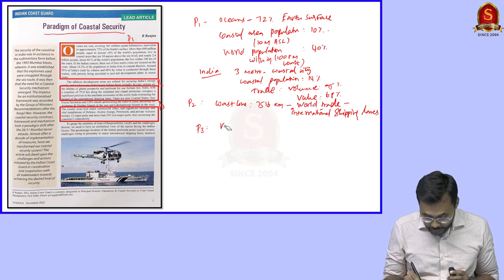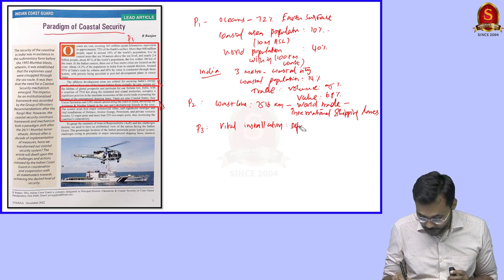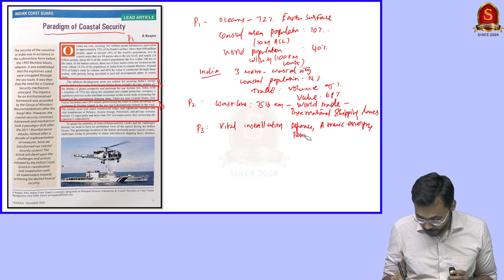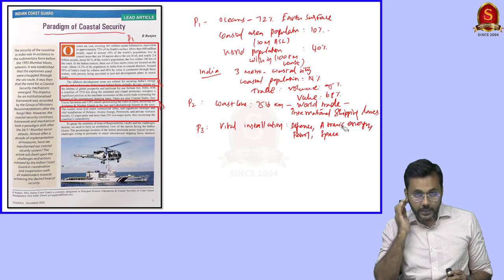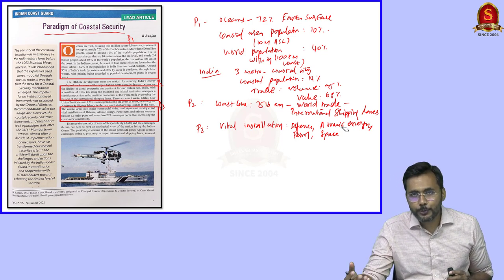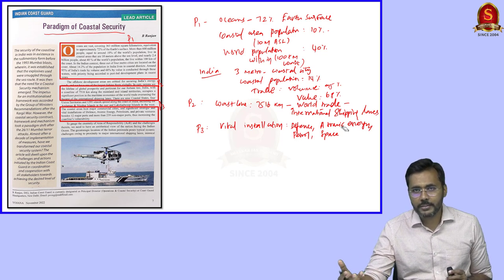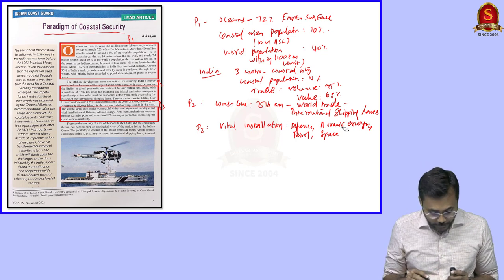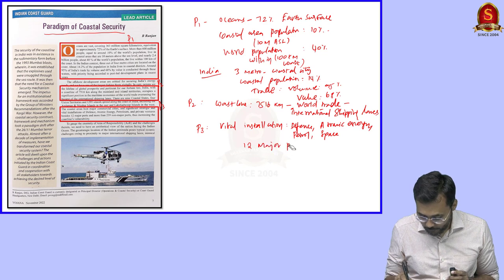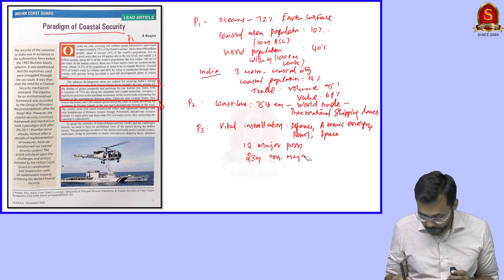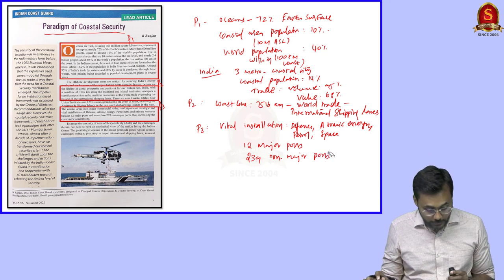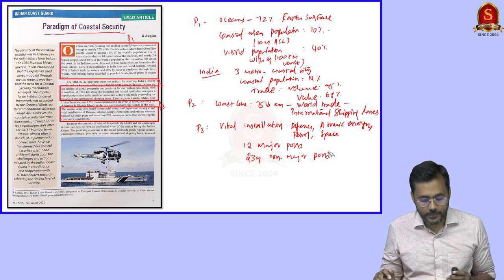India also has vital installations important for security and economic perspective — defense, atomic energy, petroleum, and space. All nuclear power plants in India are very close to coastal areas, all refineries are located in ports, and space facilities like Sriharikota are very close to coastal areas. India has 12 major ports and 239 non-major ports. This data you can use in your answer writing and substantiate with these facts.